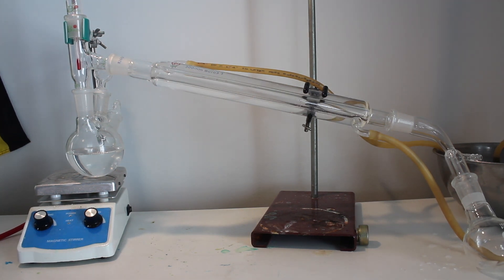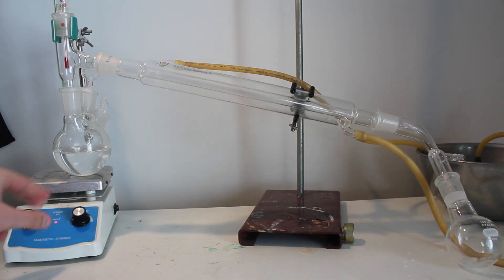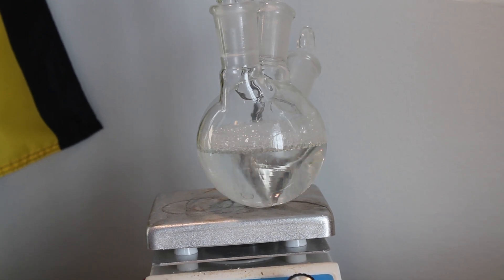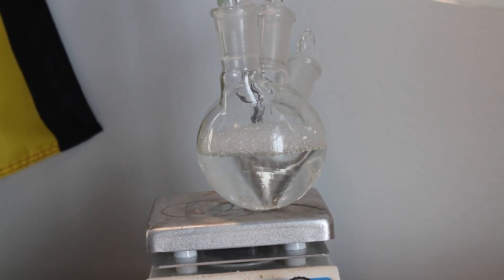This will be added to a round bottom flask, then distilled. There was bubbling, but this was not a problem. If the bubbles reach too high, just turn down the temperature until they recede.